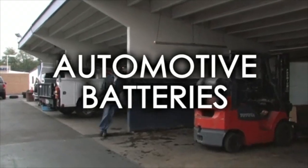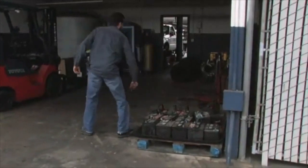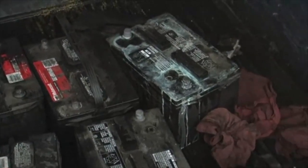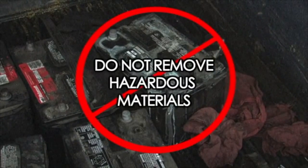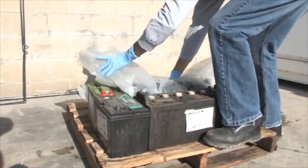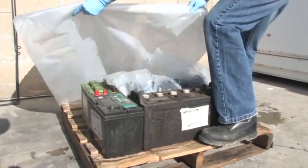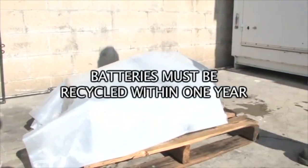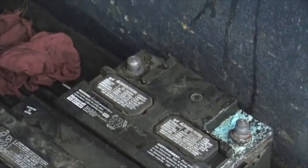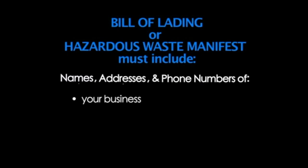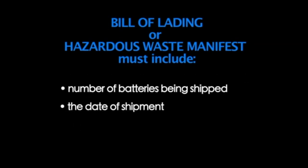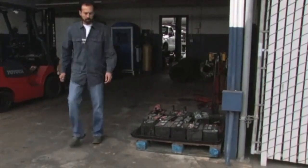Automotive lead-acid batteries used in cars, trucks, forklifts, and other work vehicles contain lead, acid, and other heavy metals, and therefore must be managed as hazardous waste if not recycled. You should not dismantle batteries or remove hazardous materials from them. If a battery has a cracked case or missing cap, place it in a plastic bag or container to prevent leakage before shipping. Store batteries upright over a non-reactive surface to prevent the release of hazardous substances to the environment. Batteries must be recycled within one year. Used automotive batteries can be transported using a bill of lading or a hazardous waste manifest. Both documents must include the names, addresses, and phone numbers of your business, the transporter, and the facility they are being shipped to, as well as the number of batteries being shipped and the date of shipment. You are required to keep copies of the shipping documents at your business for at least three years.